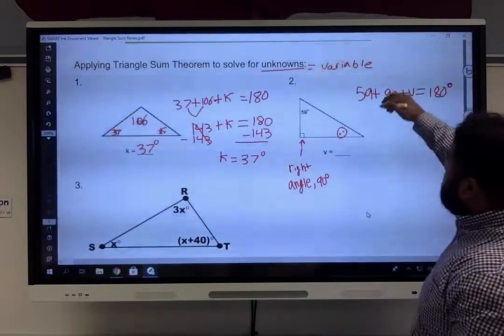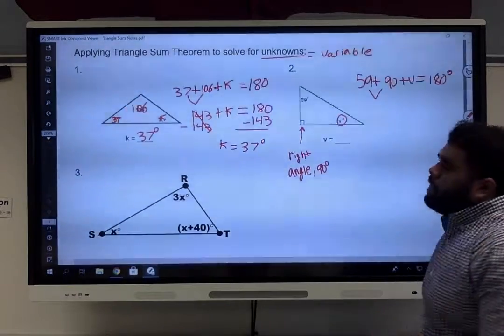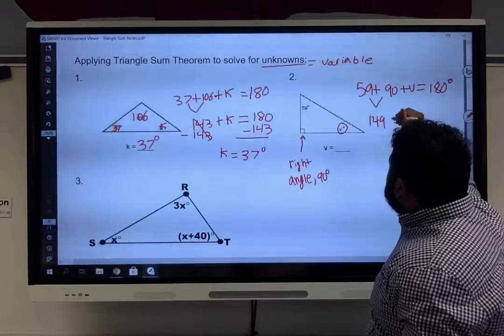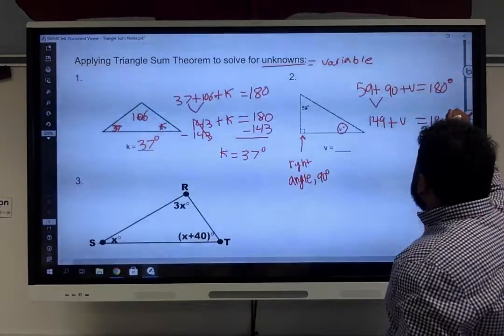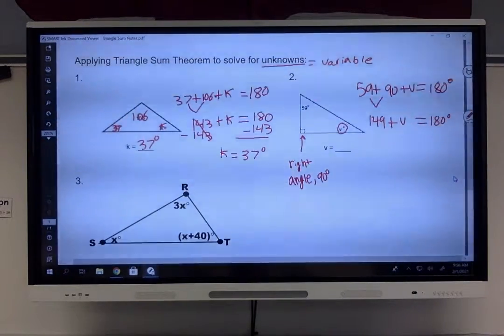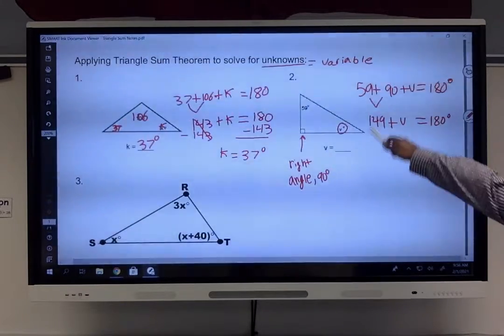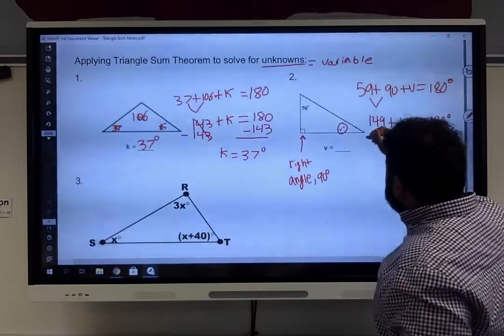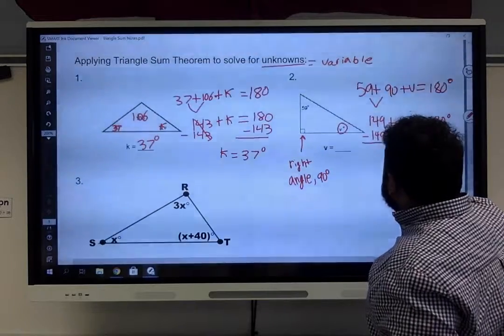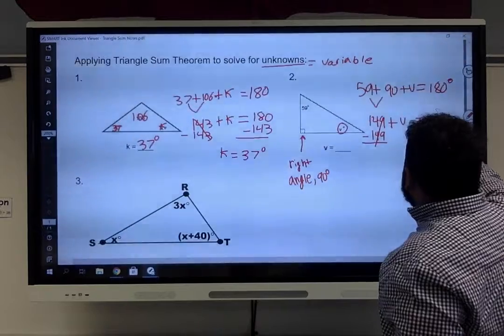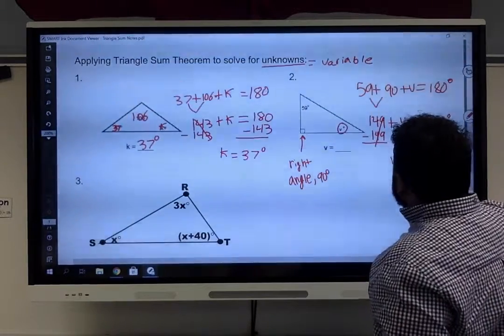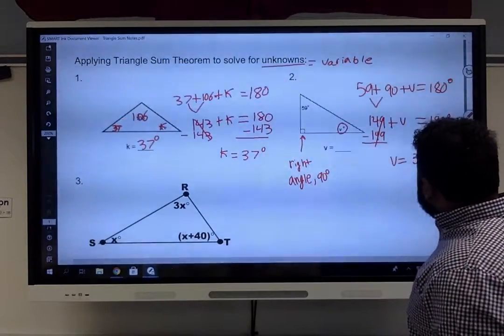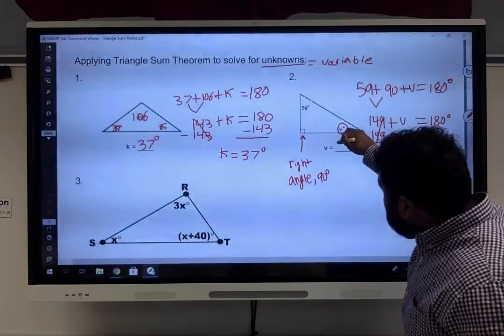So 59 plus 90 will equal 149. Now, I'm looking for V. So I have 149 because I added up 59 and 90, and I'm looking for V. So again, what do I do? Same thing I did over here. I just subtract 149 from both sides. That equals 0. We have V equals 180 minus 149 will give you 31 degrees. So V will equal 31.